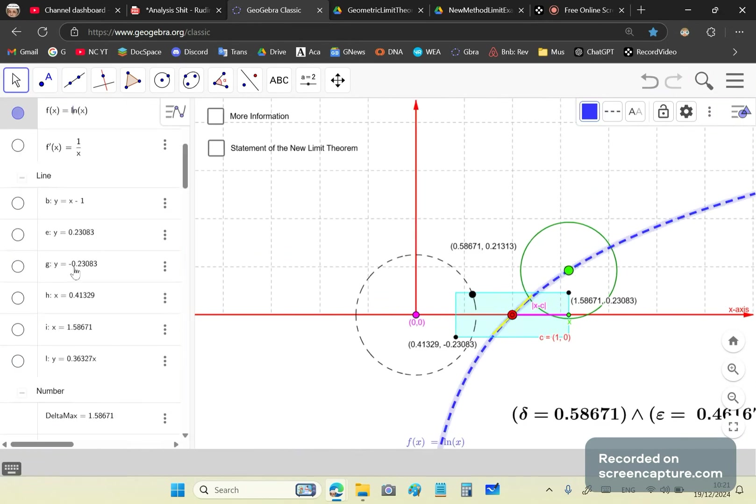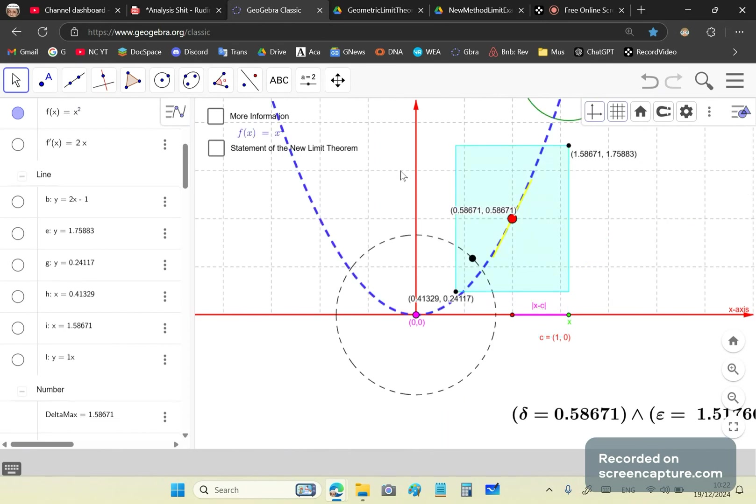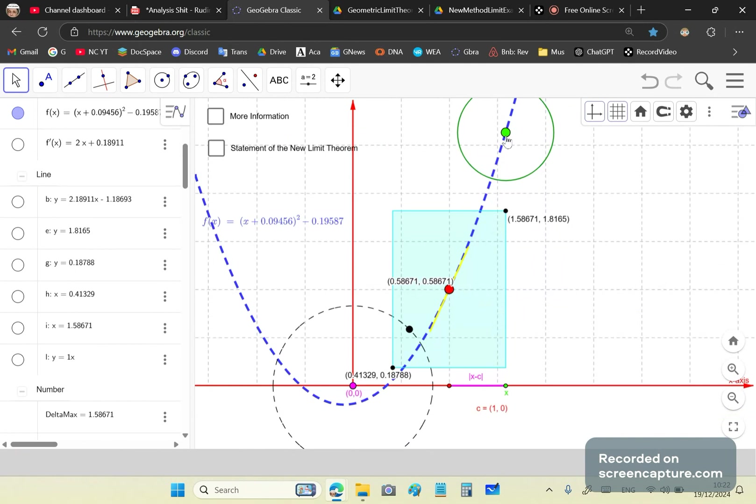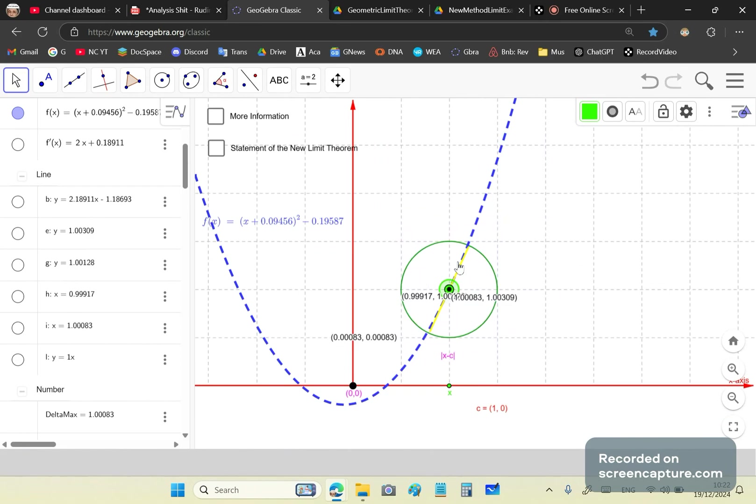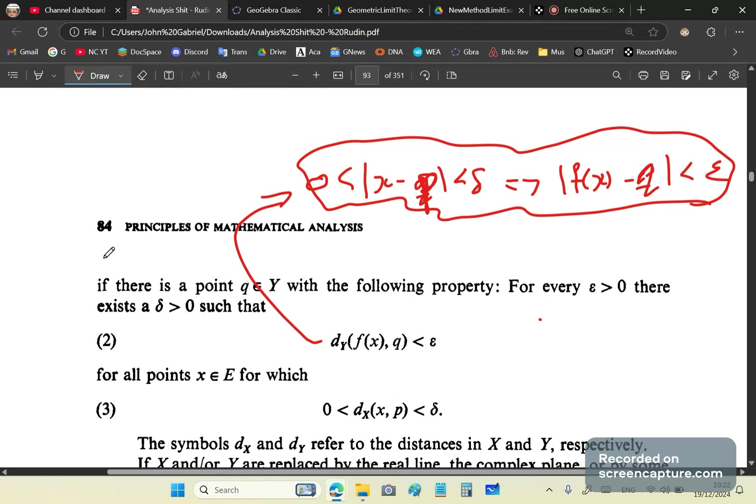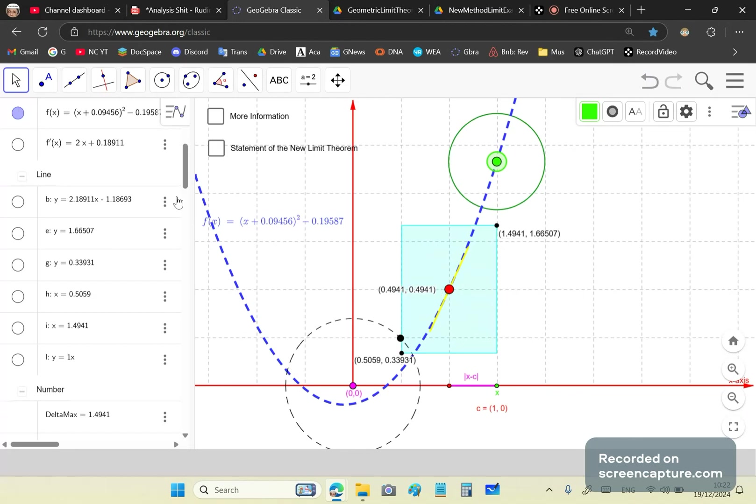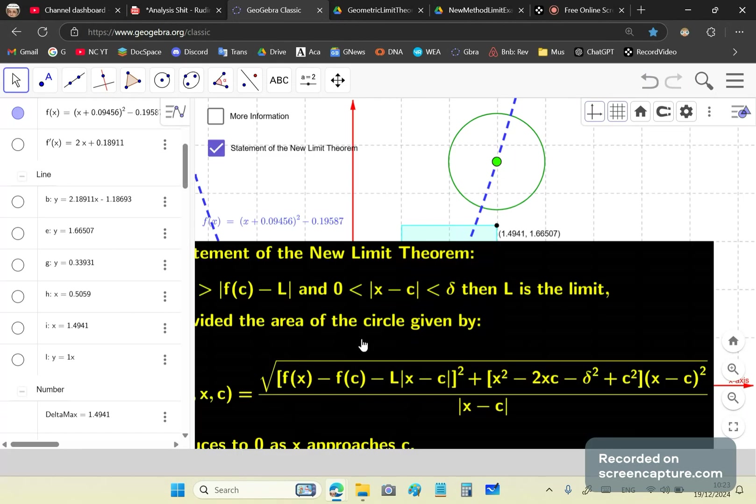You can choose anything you like in here. You can put a new function in here, any function you like. Let's put a parabola, let's say X squared like that. The same thing will happen. As this green circle approaches the red dot, the area of this broken line circle will approach zero, and it will work the same for any function you put inside there. This circle here is formed by this equation.